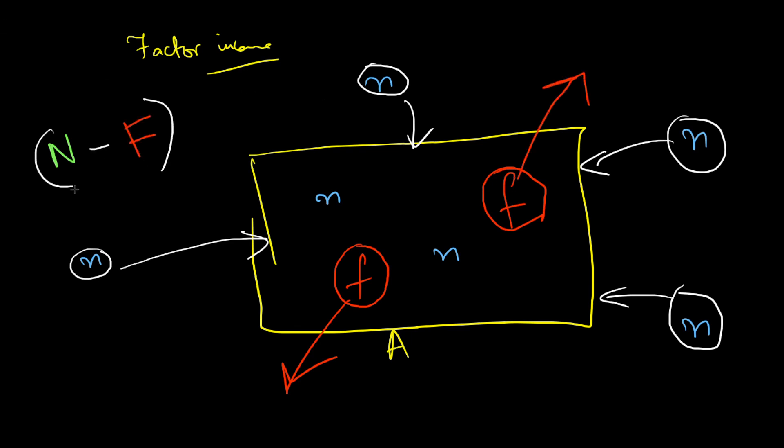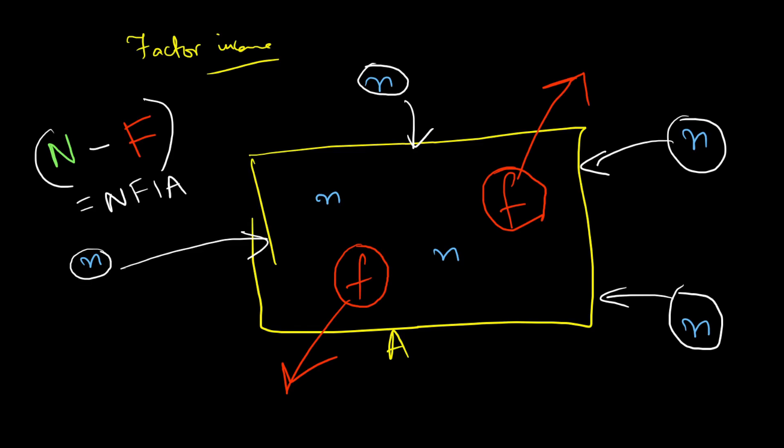This N-F is known as the net factor income from abroad, and if you add this to the GDP, you get GNP. So the basic concept behind this is that you have the nationals of this nation A spread all across the world.